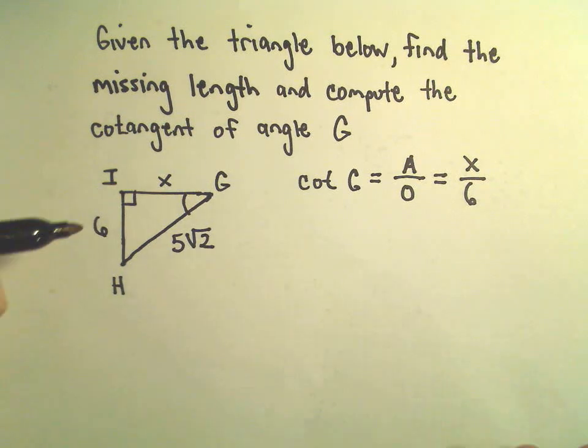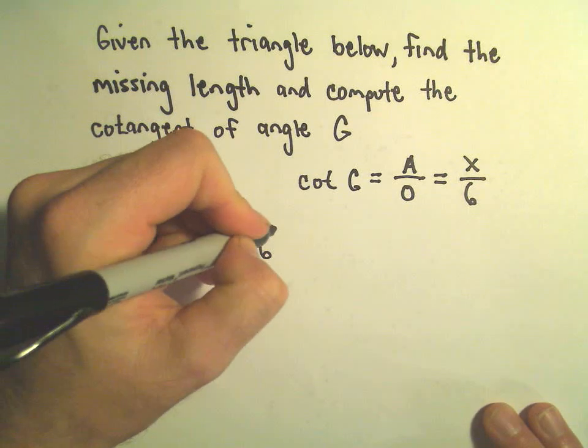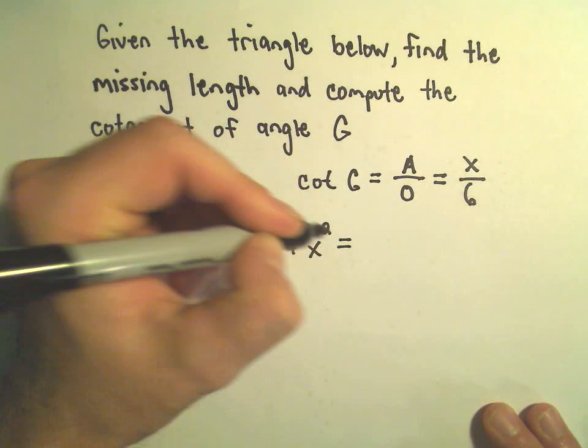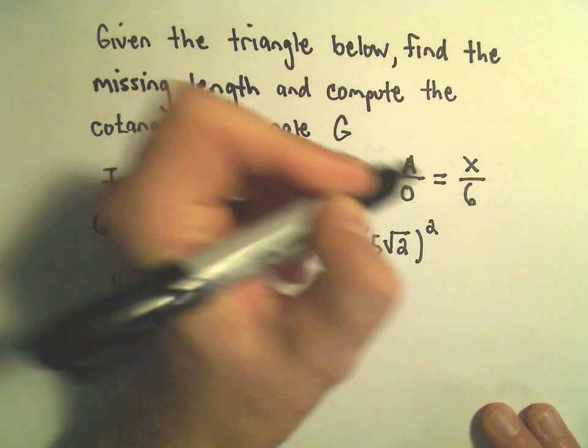But this isn't at all really too terrible. We're just going to have to use Pythagorean Theorem. So it says 6 squared plus x squared. That has to equal 5 times the square root of 2 squared.